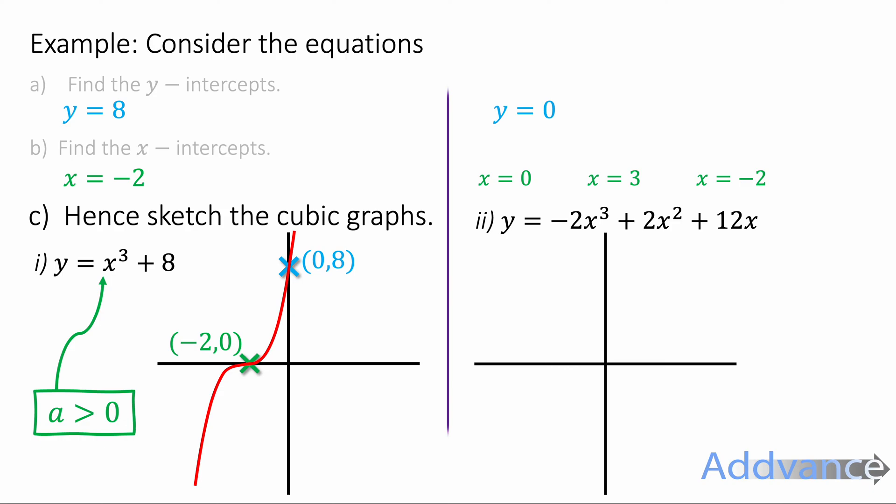Now we need to plot the other curve. The x and y-intercept is (0, 0). So the y-intercept is (0, 0). And also there is an x-intercept at (0, 0) as well. So they cross over and they are the same coordinate. There's also an x-intercept at (3, 0) and an x-intercept at (-2, 0).